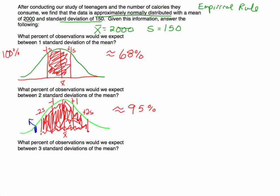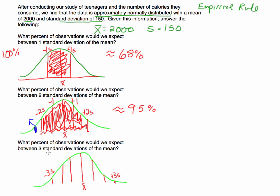Finally, what if we go 3 standard deviations? Drawing the mean in the middle again, I'm going 3 standard deviations in each direction — plus 3s and minus 3s. Subtracting 3 values of 150 means subtracting a total of 450. The percent of values expected to fall within minus 3 and plus 3 standard deviations would be approximately 99.7%. For any data that is approximately normal, this works.